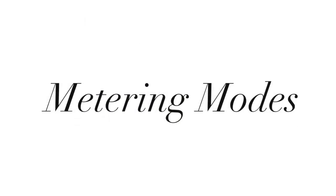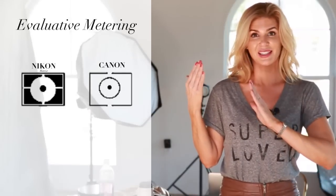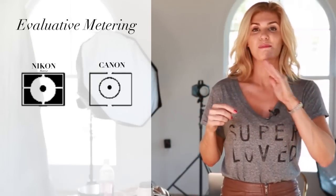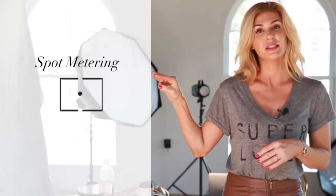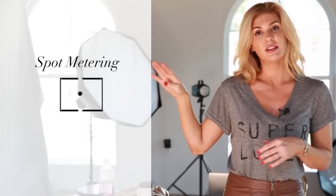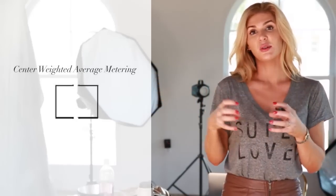Getting into understanding metering modes. You have four metering modes: evaluative — that's what Canon calls it — or matrix. The second one is partial. The third is spot. And the fourth is center-weighted mode.